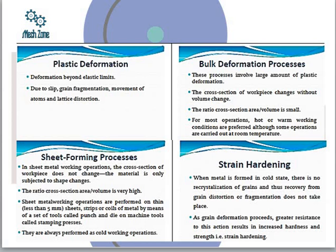Ultimately there is a permanent change in shape and size. Bulk deformation processes involve a large amount of plastic deformation, and such processes are called bulk deformation processes. The cross-section of the workpiece changes without any change in volume — volumetric strain is zero. The ratio of cross-section area to volume is very small because the volume is very large and the cross-section area is generally small.